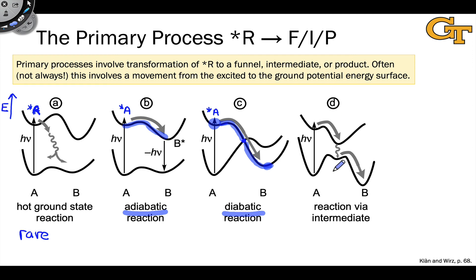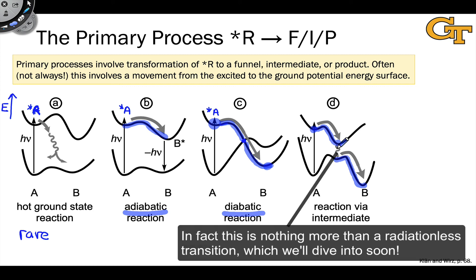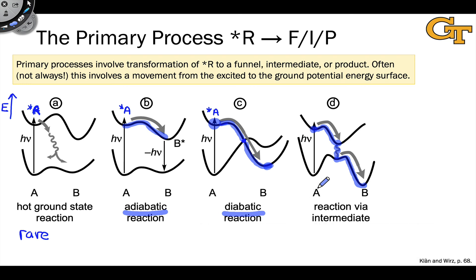Reaction via an excited intermediate is subtly different from the diabatic reaction, because instead of the potential energy surfaces crossing, we reach an excited intermediate I* that then converts to the ground state without emitting a photon and proceeds on to product. There's a gap between the ground and excited potential energy surfaces, and the molecule essentially needs to traverse that gap through a quantum mechanical process. We'll try to lend some clarity to the nature of these transitions across gaps when talking about reaction via an excited intermediate — this is a very common paradigm as well.